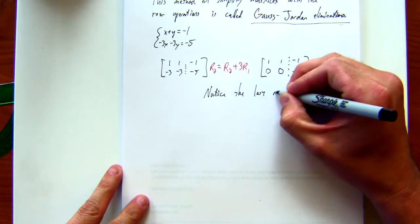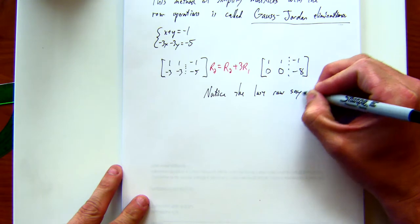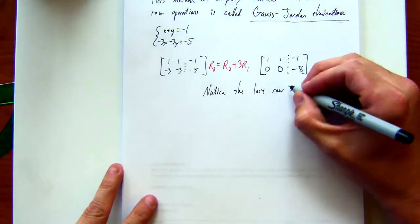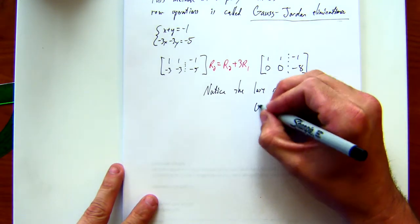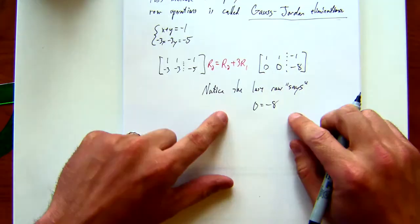Notice the last row, what does that say mathematically? Zero equals negative eight. Is this true?